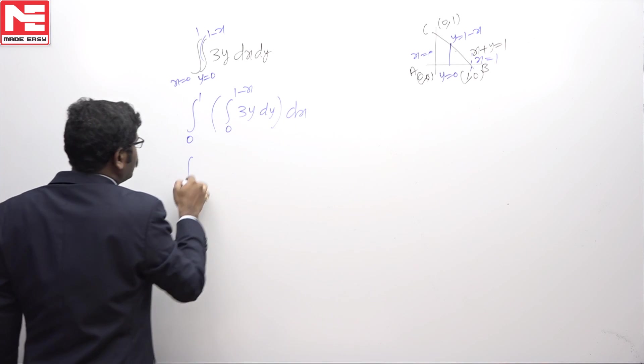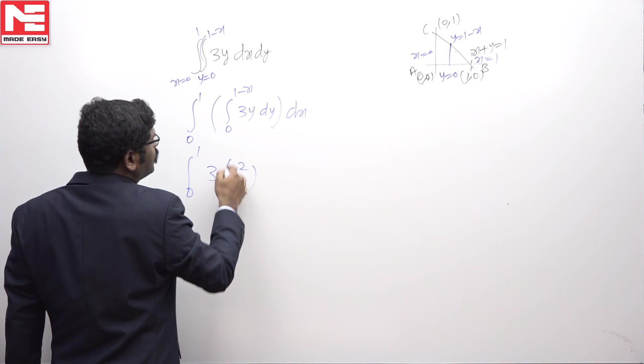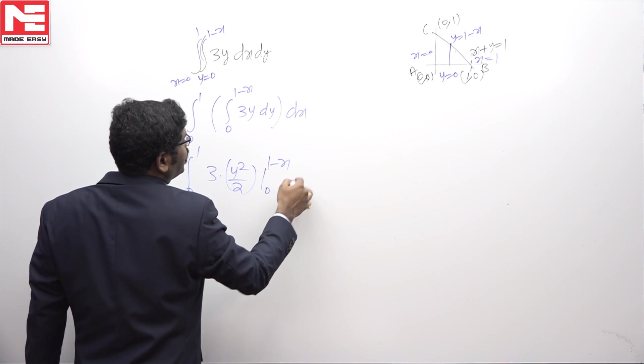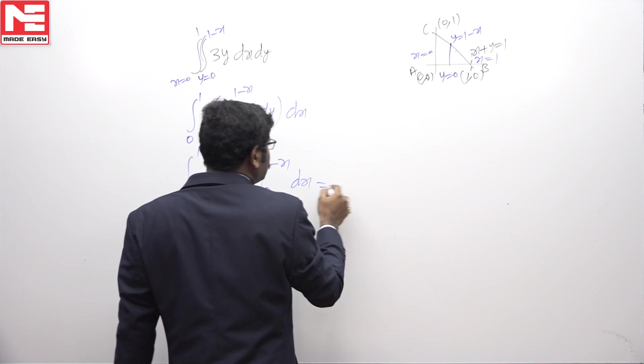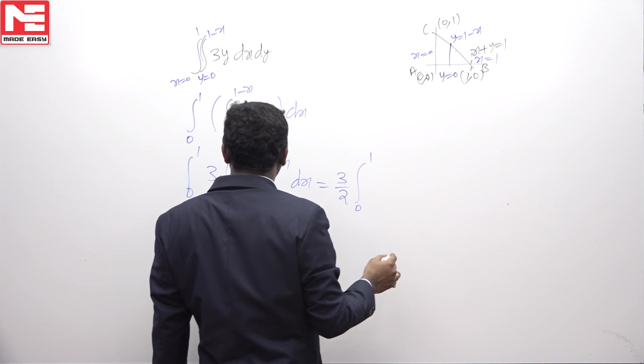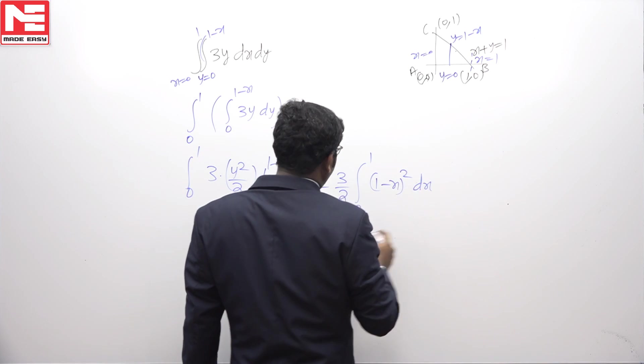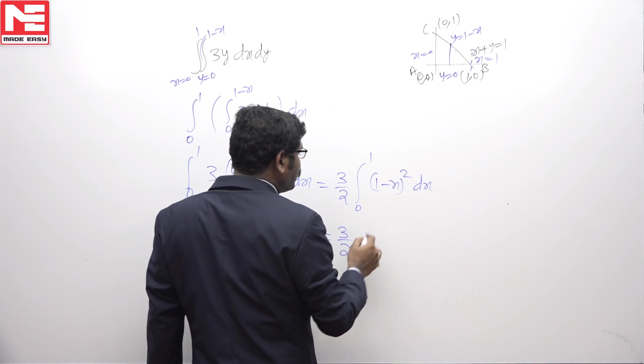This gives 3 times y squared over 2, evaluated from 0 to 1 minus x, dx. That is 3/2 times the integral from 0 to 1 of (1 minus x) squared dx. Integrating this gives 3/2 times (1 minus x) cubed over 3 times minus 1.